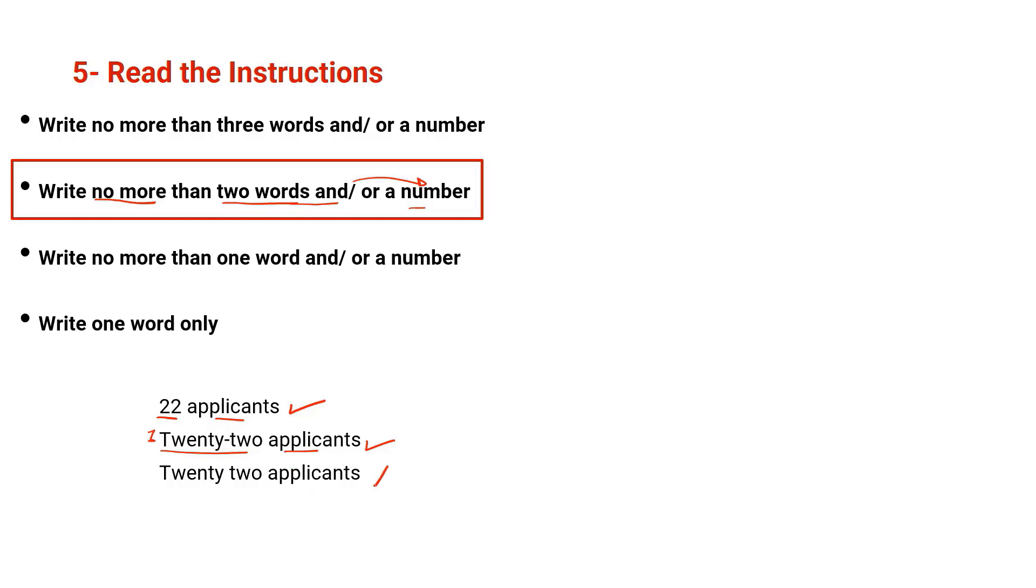But this option is wrong because twenty-two without a hyphen is considered two words. This is a word and this is a word, and this is the third word. These are three words, but the question tells you no more than two words. That's why you have to understand the question very well, the instructions very well, and the options.